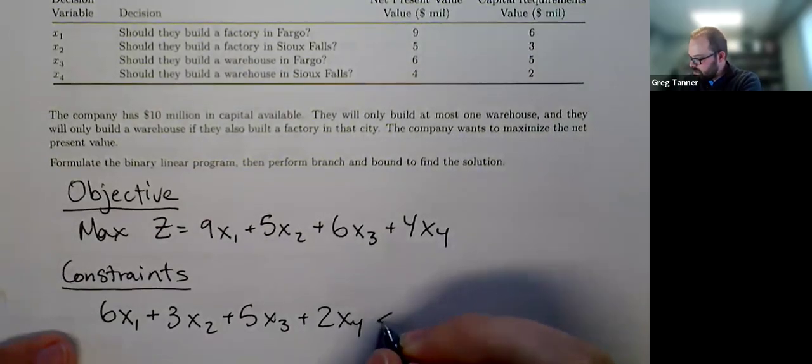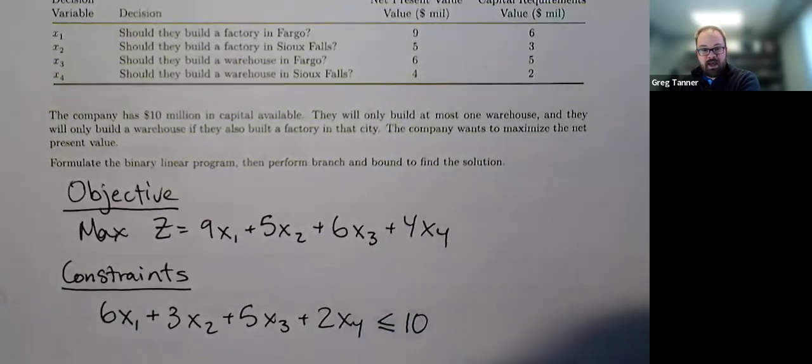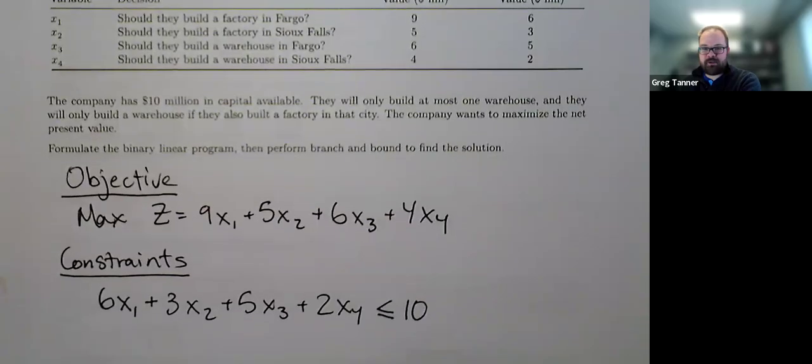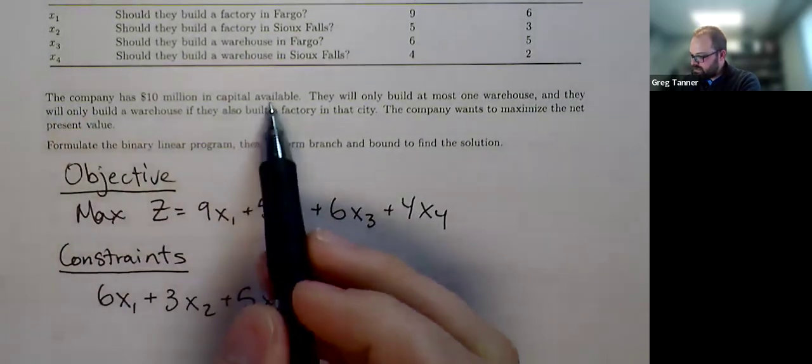And so the total cost that we spend has to be less than or equal to the capital that we have available. We're doing this in millions of dollars just to keep the numbers easier to write. We don't have to write all the extra zeros. Okay, so that takes care of this line.